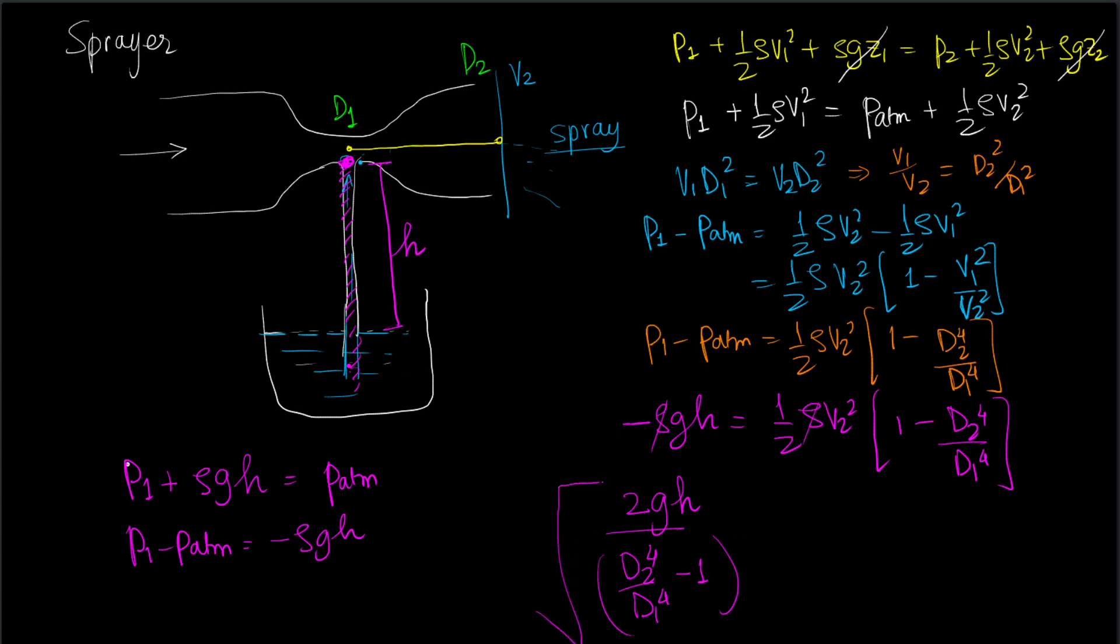And square root of this entire thing is equal to v2. Thus we have an expression for the velocity at exit which will just cause spray.